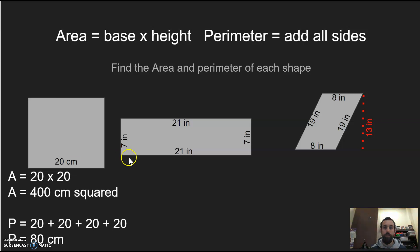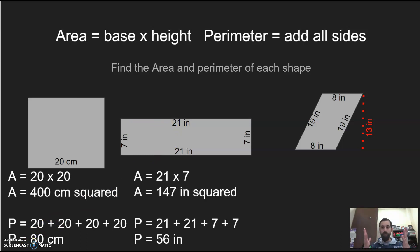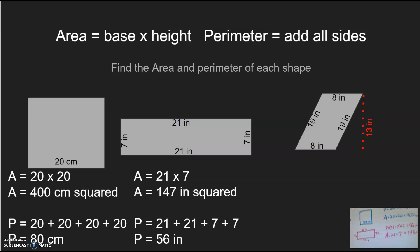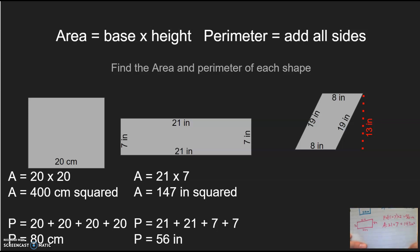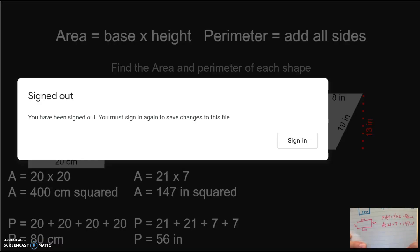Now move on to the rectangle and try to find its area and perimeter. The area was 147 inches squared and the perimeter was 56 inches. This is how I did it in my book — I did it a little bit different than what's on the screen, so if you need to pause and see what I did, you can.